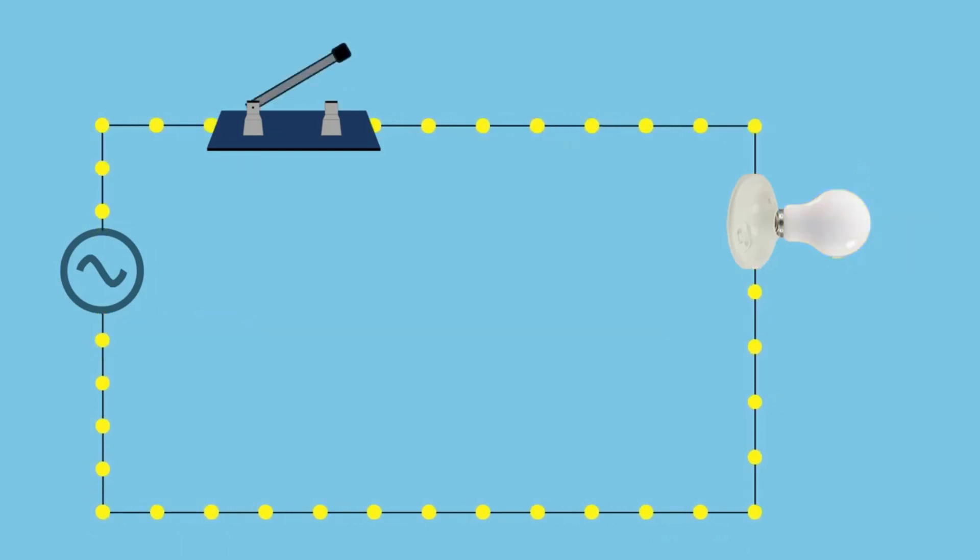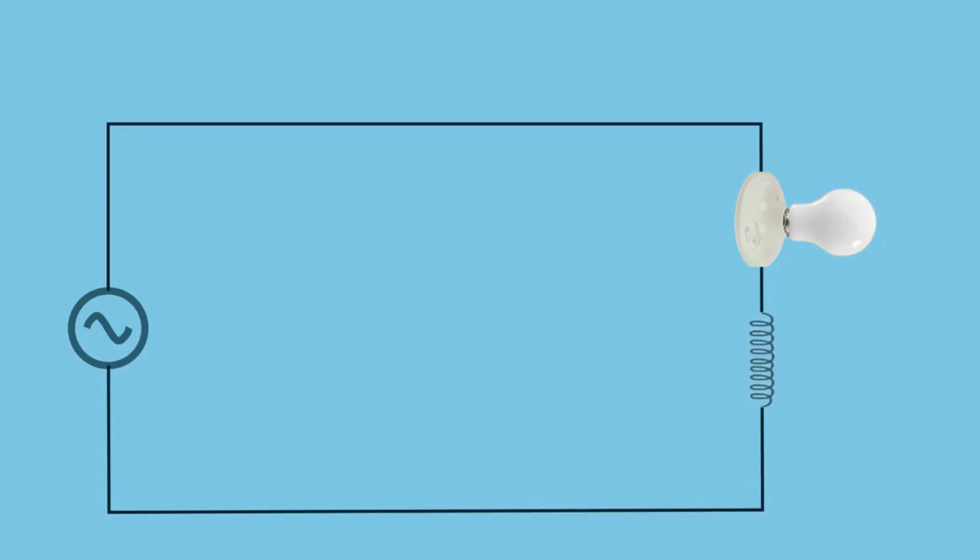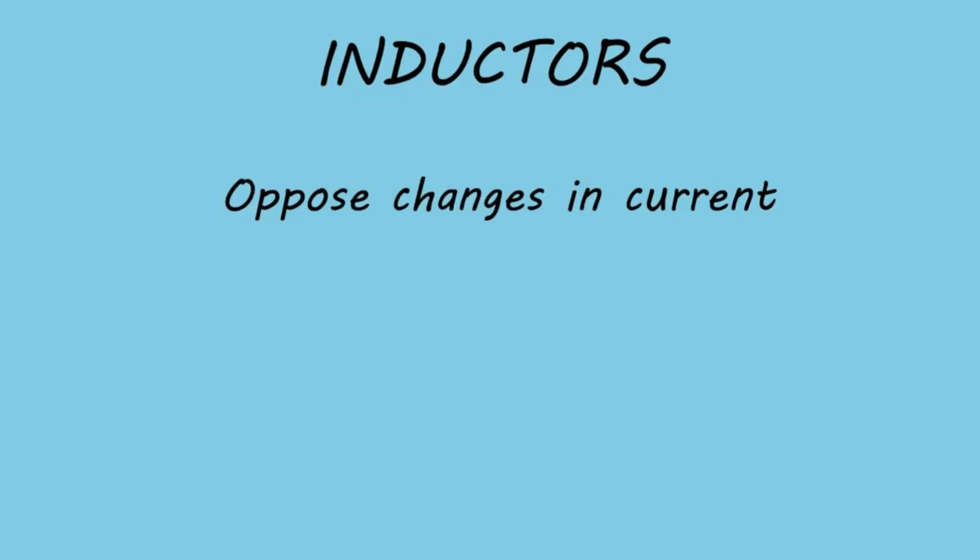Now let's complicate things a little bit by adding two components that behave differently from resistors. These are inductors and capacitors. Inductors resist changes in current by storing energy in a magnetic field. When the current increases, the inductor opposes it, causing the current to lag behind the voltage. This is often remembered with the memory aid ELI. In an inductive circuit, voltage leads current, or current lags voltage.